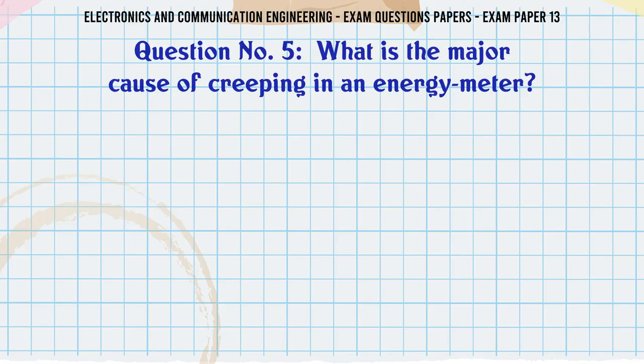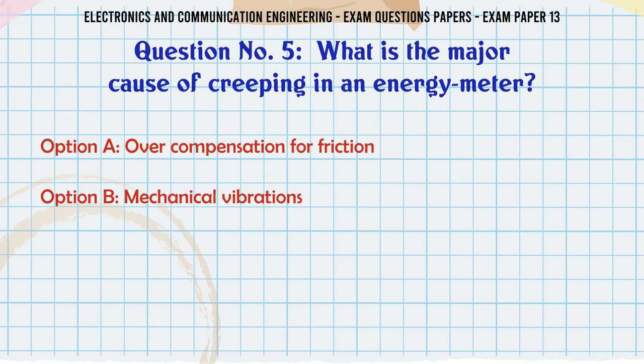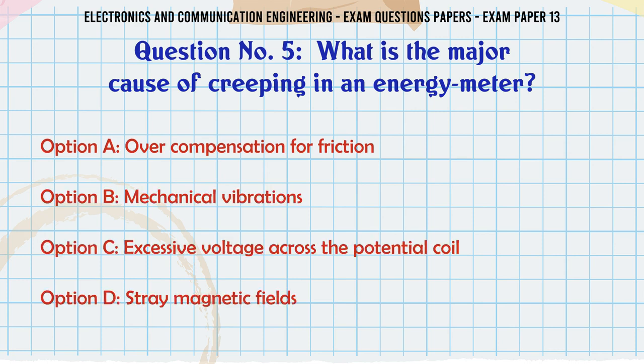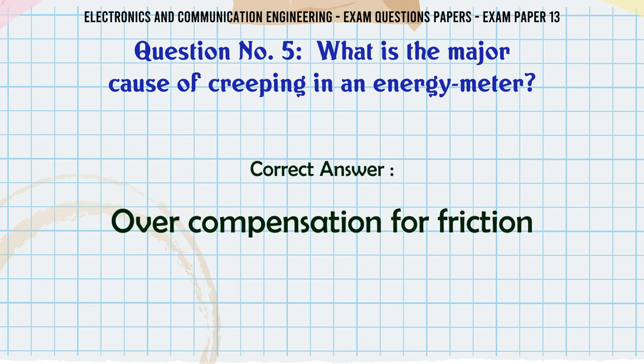What is the major cause of creeping in an energy meter? A: Overcompensation for friction, B: Mechanical vibrations, C: Excessive voltage across the potential coil, D: Stray magnetic fields. The correct answer is overcompensation for friction.